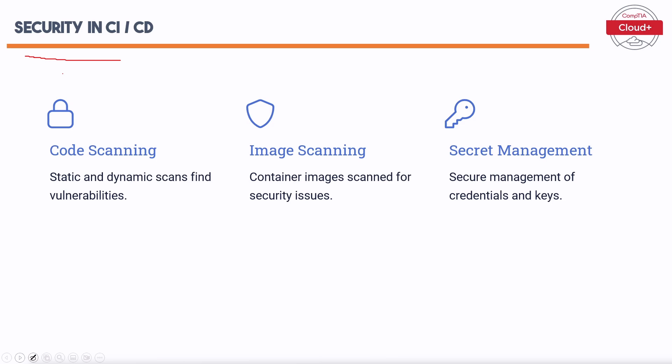Security must be integrated into every stage of the CI-CD pipeline. The key security practices are: Code Scanning — static and dynamic scans find vulnerabilities, analyzing code for potential security issues early. Image Scanning — container images are scanned for security issues, ensuring containers are secure and free from known vulnerabilities. Secrets Management — secure management of credentials and keys ensures sensitive information is only accessible to authorized components and users.